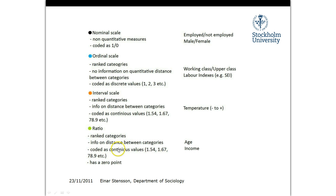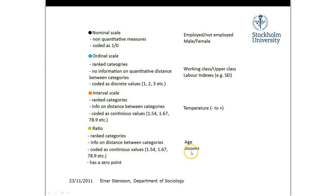And then there's ratio scale. It has everything all of the others have: it is ranked, it has a measurable distance between each category — usually coded as a continuous value with decimal points — but it also has a zero point. One classic example is age: you can't be minus one years old; you begin at zero and get older. Another is income: you don't get paid minus 500 kroner for your job, so there's an absolute zero point.